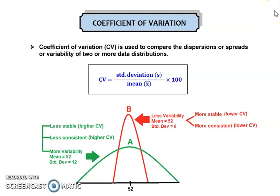In this video I'm going to explain about coefficient of variation. What is coefficient of variation, or CV? It is used to compare the dispersions, spreads, or variability of two or more distributions. CV is given by standard deviation divided by mean, multiplied by 100. We normally express CV as a percentage, which is why we multiply by 100.